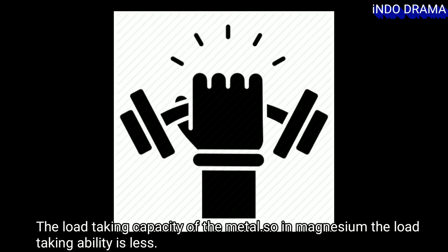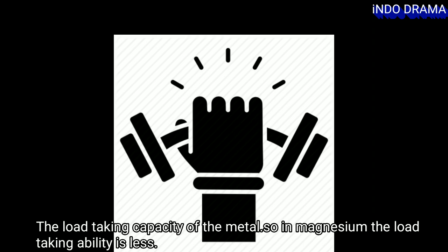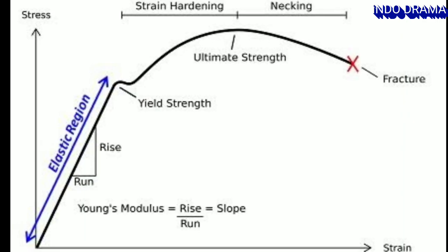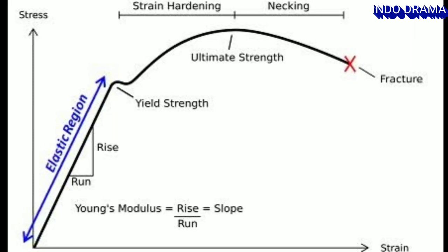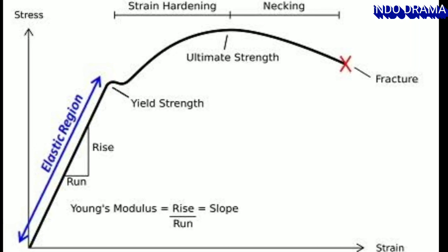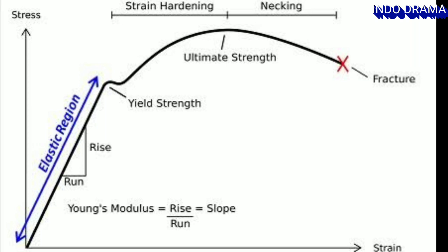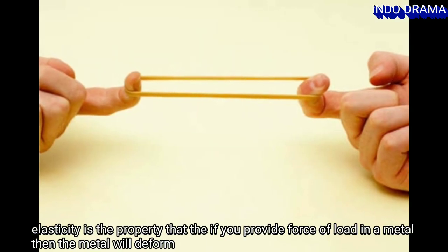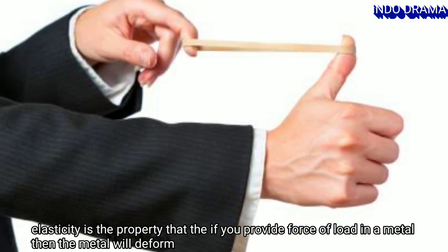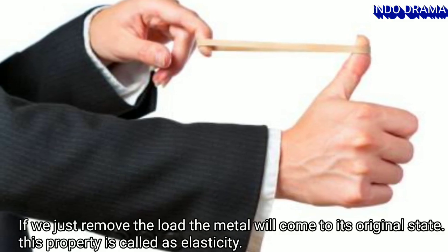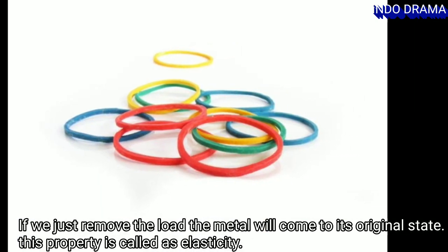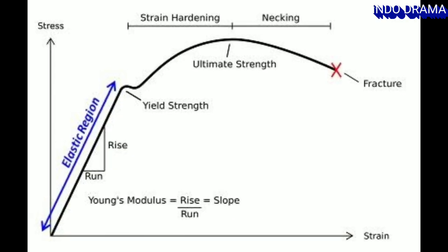Looking at the stress-strain diagram, you can see a straight line going up to a small curve — that straight line is known as the elastic region. Elasticity is the property where if you provide any kind of force or load on a metal, the metal will deform, but if you remove the load, the metal will come back to its original shape.